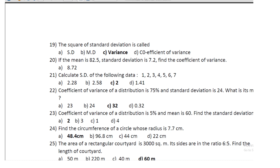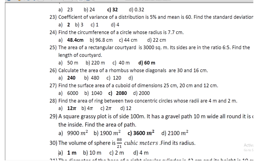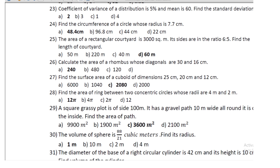Question 22: find the circumference of a circle whose radius is 7.7 cm; the circumference is 48.4. Question 23: the area of a rectangular courtyard is 3000 m² with sides in the ratio 6:5; find the length — the length is 60 m.